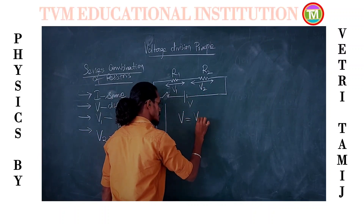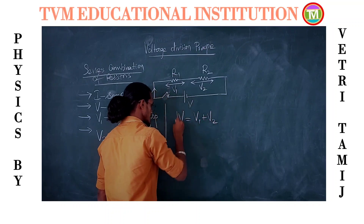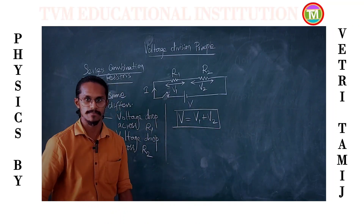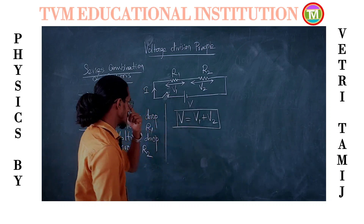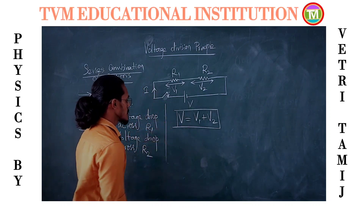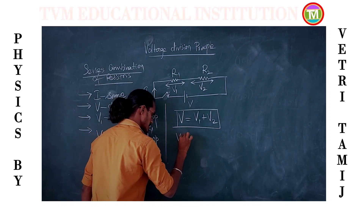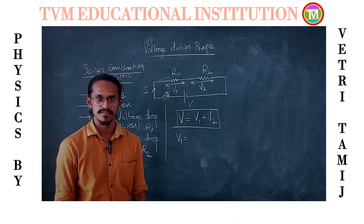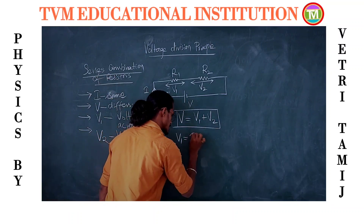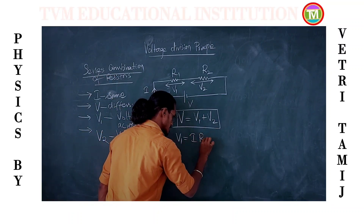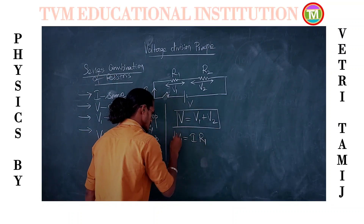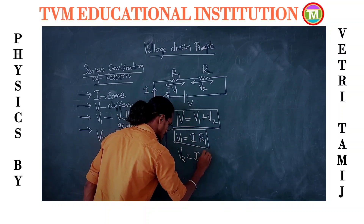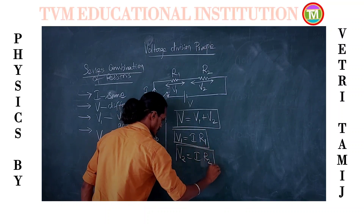V gets divided into V1 plus V2. If you express the individual voltage drop using Ohm's law: V1 equals current times resistance R1, and V2 equals current times resistance R2.